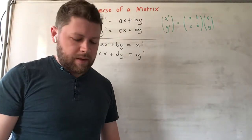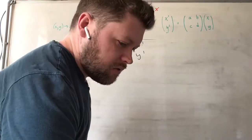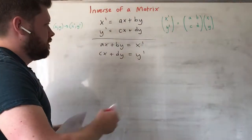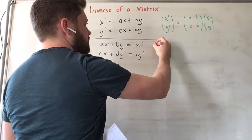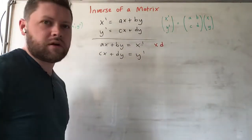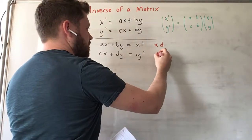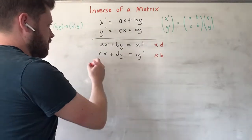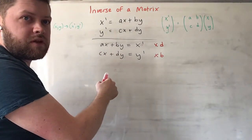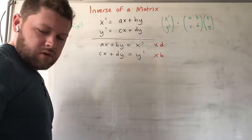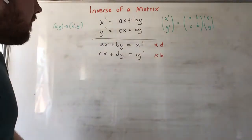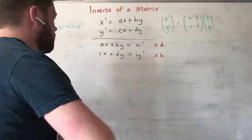Now what I'd like to do is multiply this one by d, the coefficient d, and multiply this one by b, and then subtract the two.